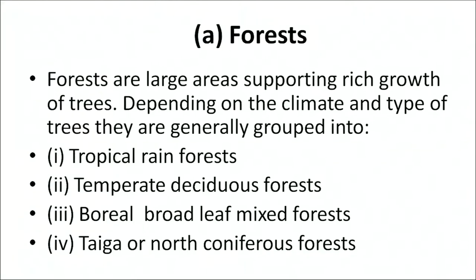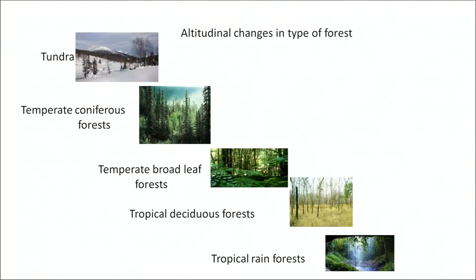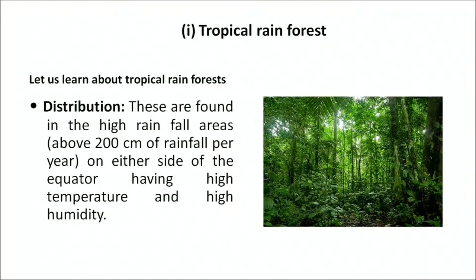Now let us learn about the forests of India. Forests are large areas supporting rich growth of trees, and depending on the climate and the type of trees, they are generally grouped into tropical rainforests, temperate deciduous forests, boreal broadly mixed forests, and taiga or north coniferous forests. This figure shows the altitudinal and latitudinal variation in the displacement of forests, representing a change from tropical rainforest towards the alpine and the polar tundra forests. Now let us discuss the tropical rainforests.